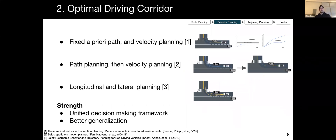A more general approach for behavior decision making is to find an optimal driving corridor, which specifies free space regions that the SDV should drive within over the planning horizon. These regions are usually defined by how obstacles should be passed or which vehicles the SDV should follow or stay ahead of. A simple approach is to assume the vehicle is following a fixed a priori path, for example the center line of the lane. Then a corridor can be defined by a velocity profile along this path, indicating whether the SDV passes a blocking obstacle before or after it blocks the path.